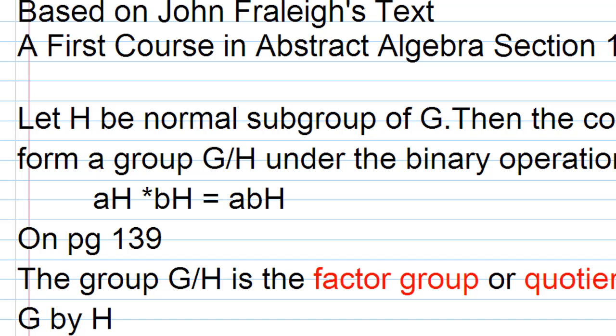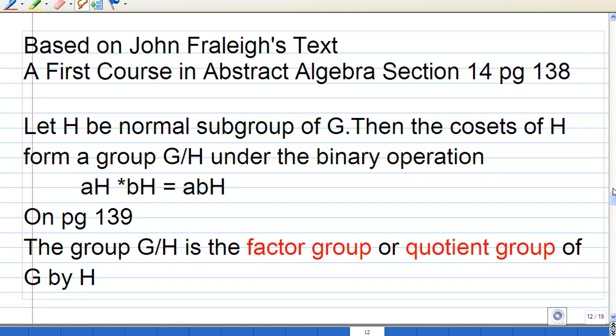Based on John Fraleigh's text, A First Course in Abstract Algebra, section 14 page 138 states that let H be a normal subgroup of G. Then the cosets of H form a group G by H under the binary operation AH times BH equals ABH. And also on page 139, the group G by H is the factor group or quotient group of G by H.